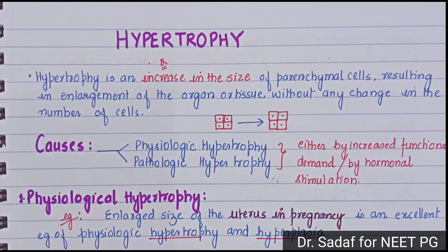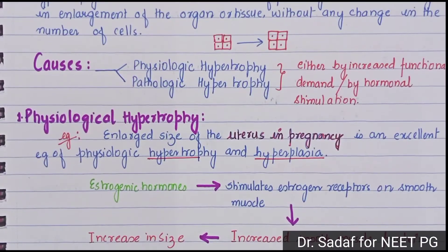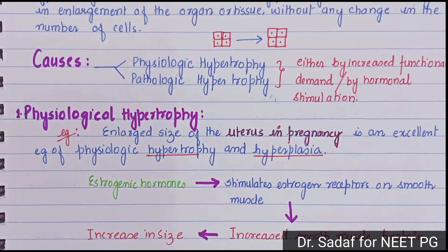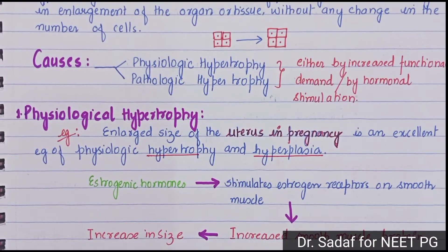First, let's discuss physiological hypertrophy — hypertrophy that occurs normally in our body. The enlargement of the uterus in pregnancy is an excellent example of physiological hypertrophy and hyperplasia.